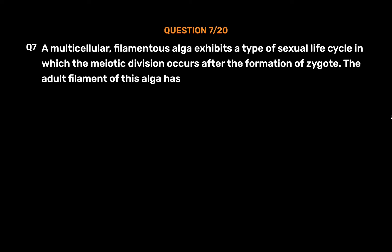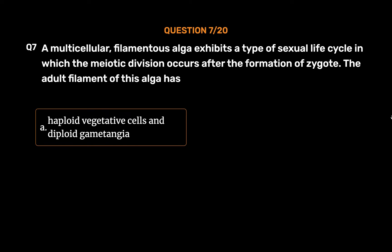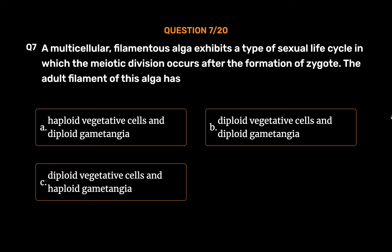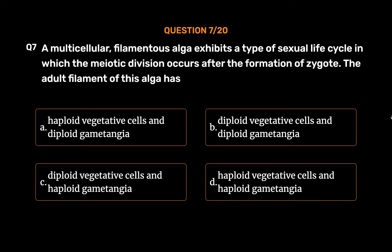Question No. 7: A multicellular, filamentous alga exhibits a type of sexual life cycle in which the meiotic division occurs after the formation of zygote. The adult filament of this alga has. Option A: Haploid vegetative cells and diploid gametangia. Option B: Diploid vegetative cells and diploid gametangia. Option C: Diploid vegetative cells and haploid gametangia. Option D: Haploid vegetative cells and haploid gametangia.